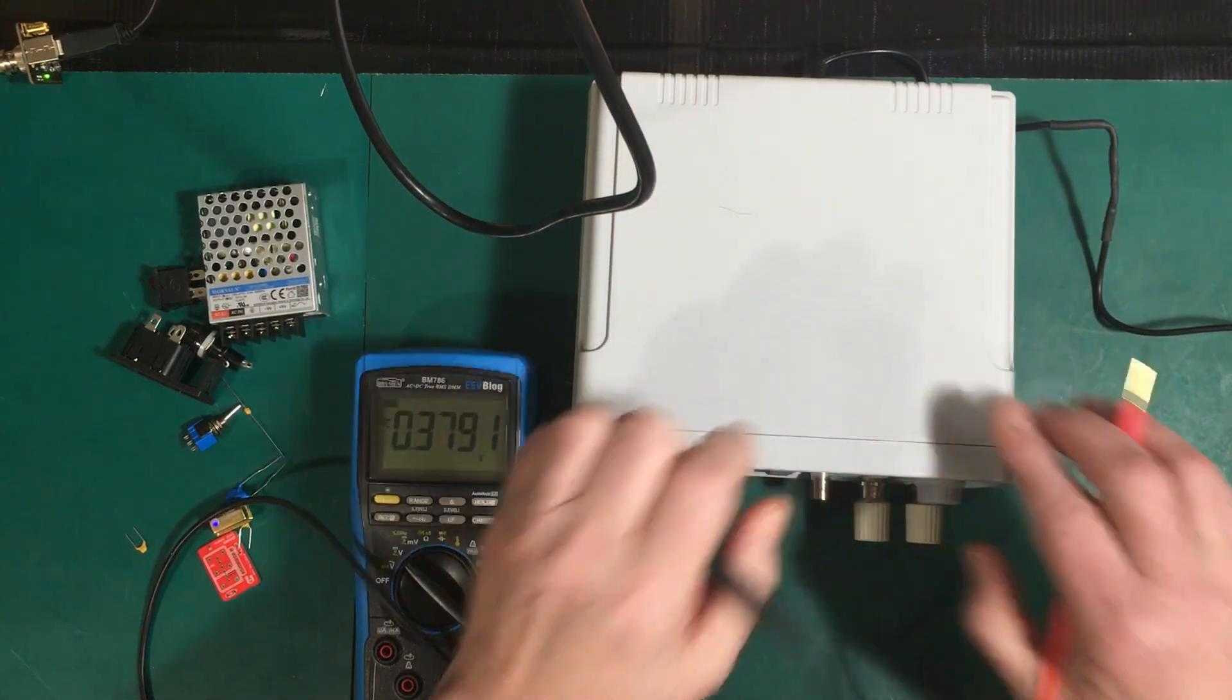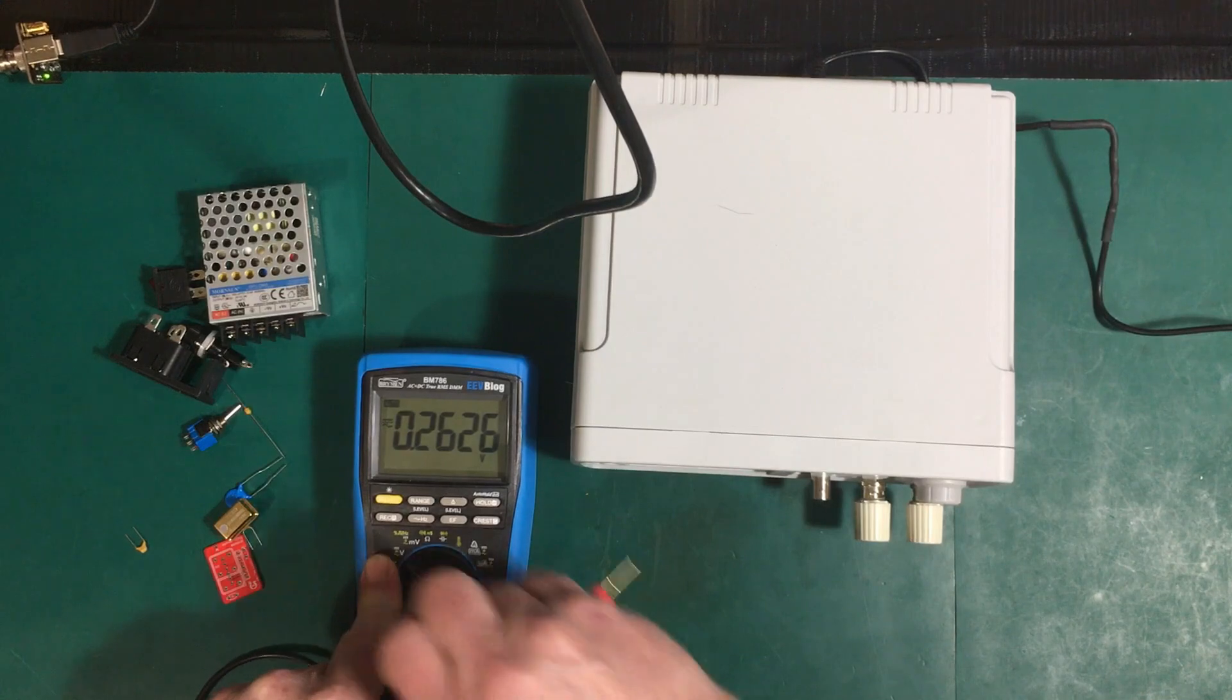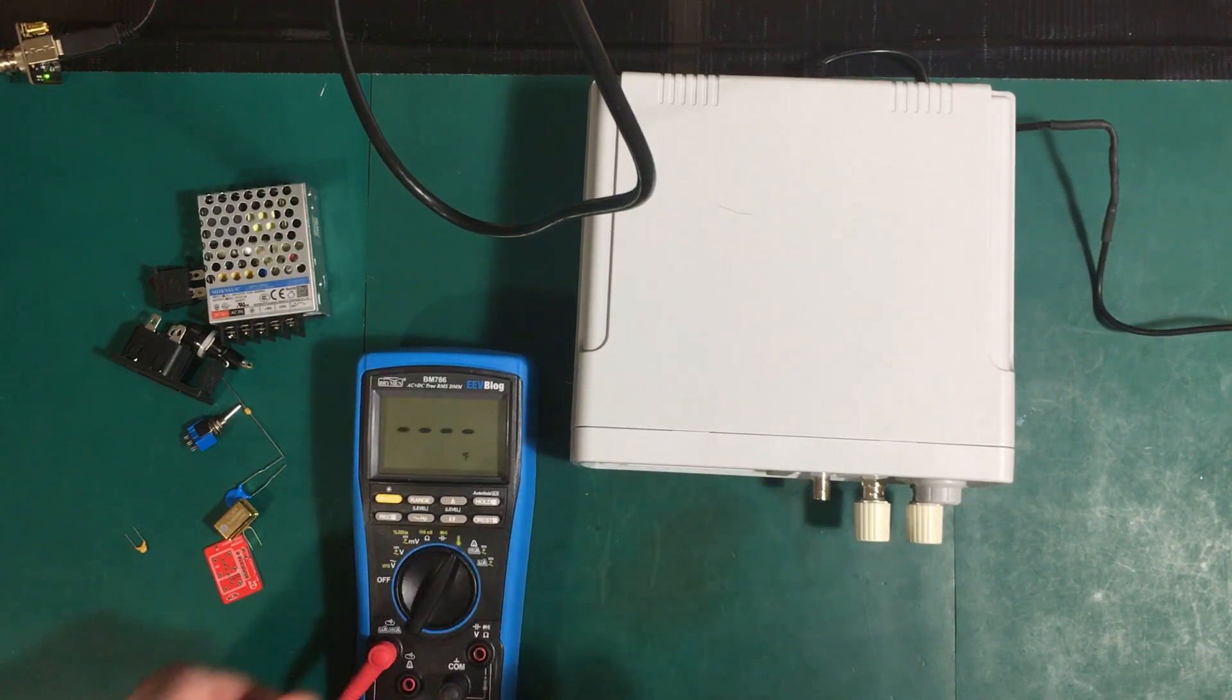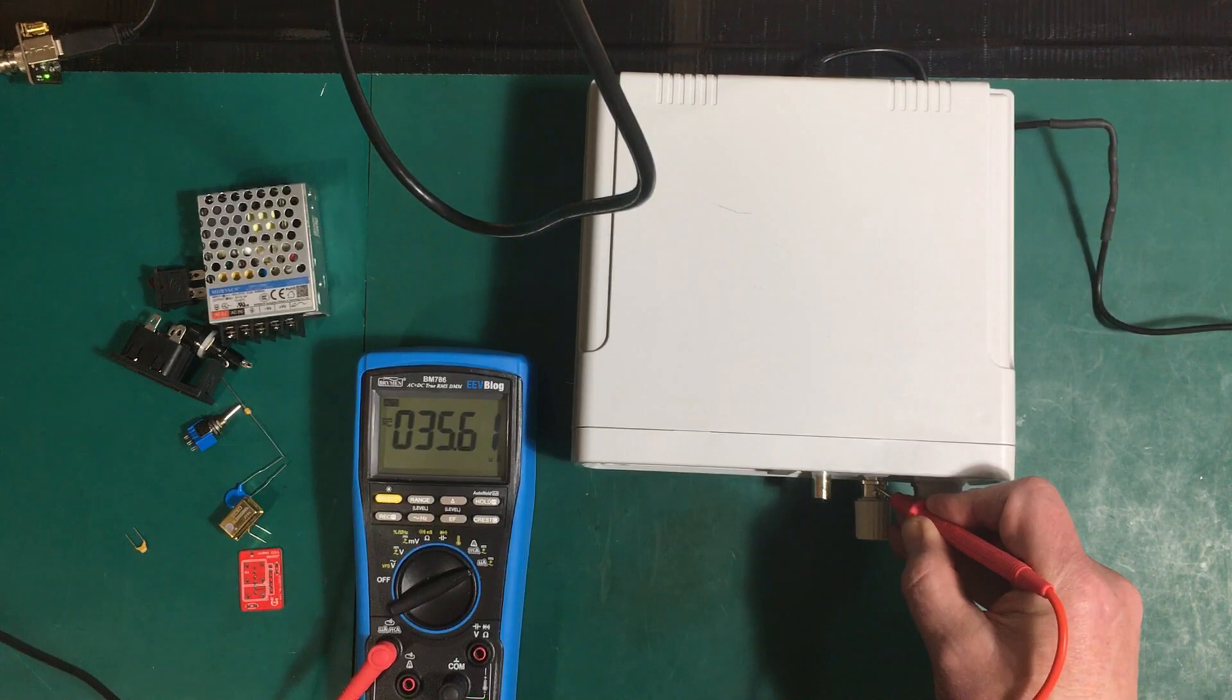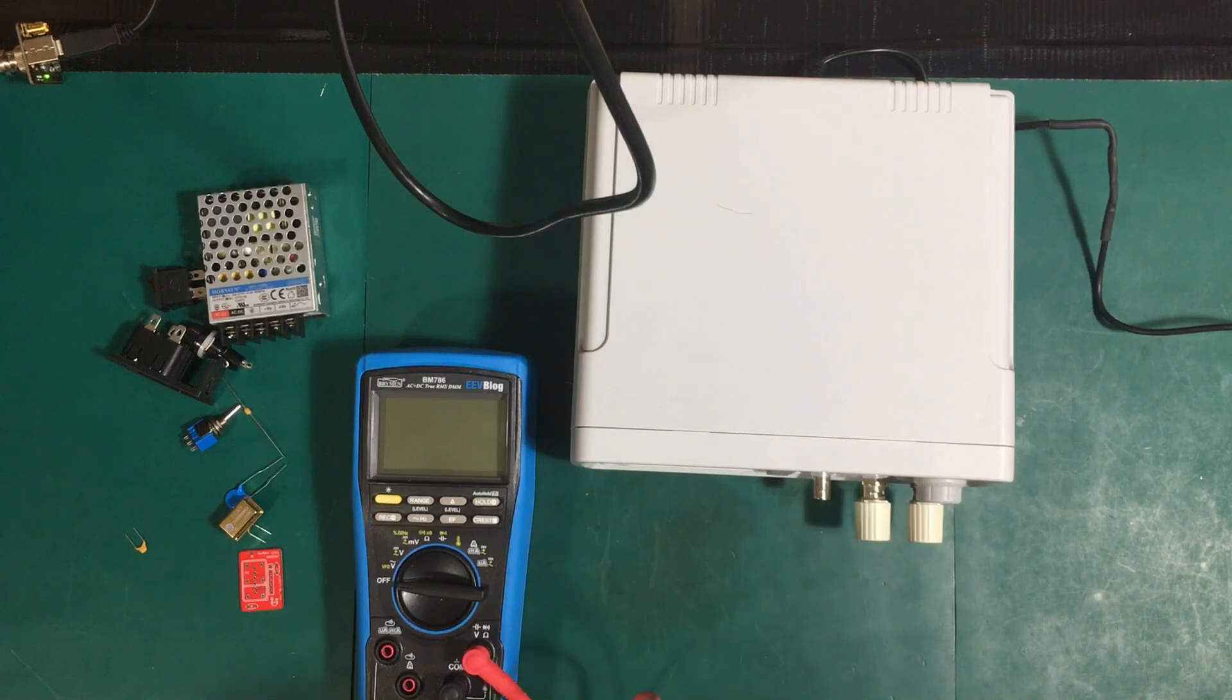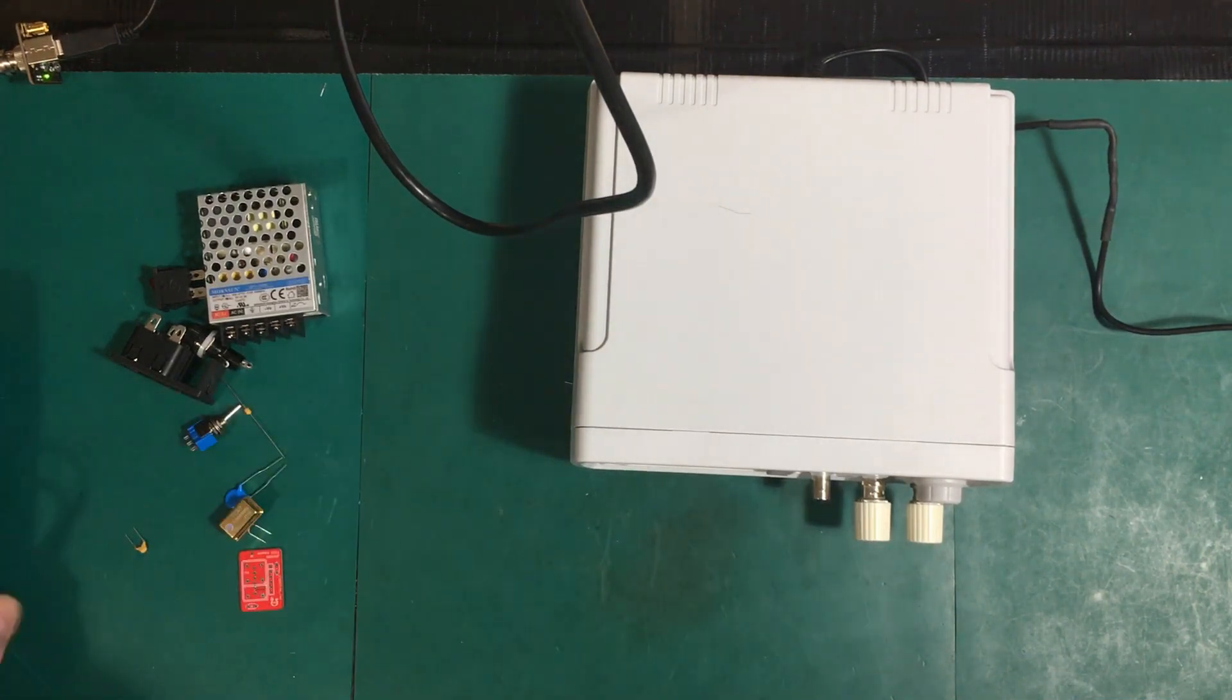We can also measure the current of that leakage. It's 35 to 36 microamps. It's not a lot, but it's enough to end the life of a field effect transistor. 50 volts at 35 microamps will certainly destroy an FET. That's one of the things we have to fix.